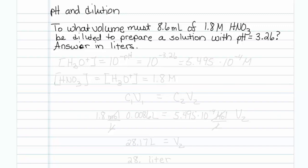pH equals 3.26. We need to figure out the hydronium concentration. The final target hydronium concentration is 10 to the minus pH, which equals 10 to the minus 3.26, which when put in the calculator is 5.495 times 10 to the minus 4 molar. That is our target hydronium concentration.